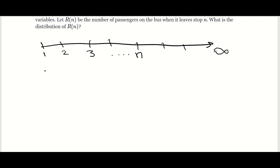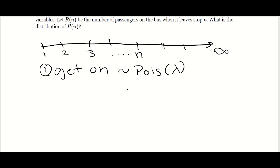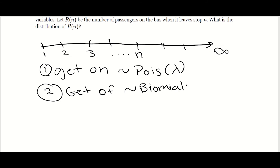We know that people do one of two things. By the way, at stop 1, there aren't any people on the bus — the bus starts empty. People either get on, and the number of people that get on has a distribution that's Poisson with a rate of lambda. We also know that people get off, and this follows a Binomial distribution with probability p, where the other parameter is just the number of people on the bus, which I'll represent with variable T.